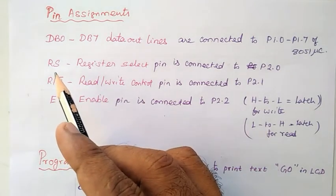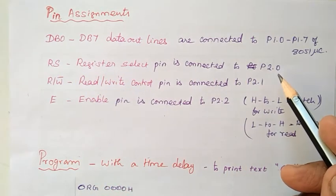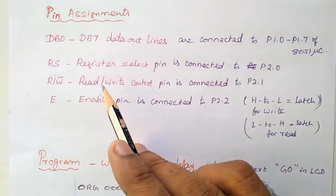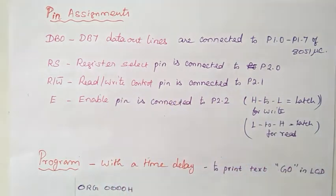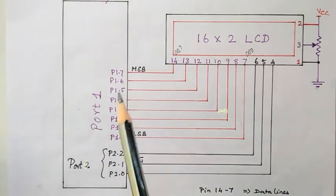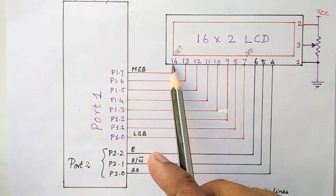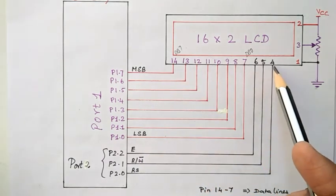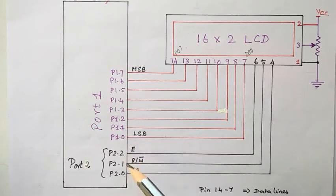RS is pin number 4 of the LCD — the register select pin — and is connected to P2.0. R/W bar, the read or write control pin, is connected to P2.1. The enable pin is connected to P2.2. In the interface diagram, Port 1.0 to 1.7 is connected to the LCD data lines (pins 7 to 14), and these three control signals RS, R/W bar, and Enable are connected to P2.0, P2.1, and P2.2 respectively.